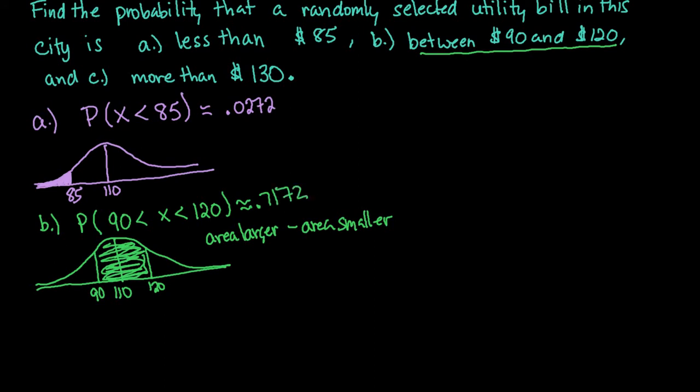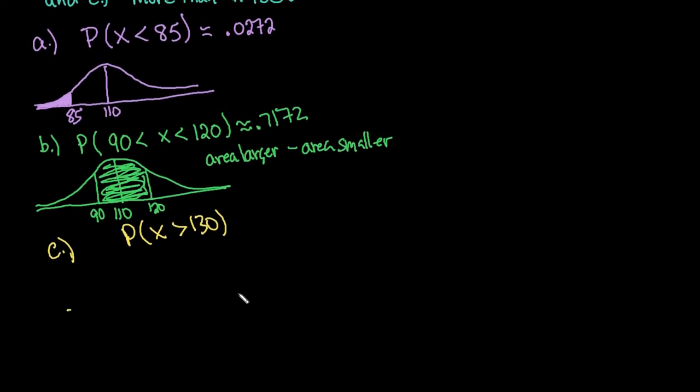Our last one is more than 130. We'll draw our picture again for visual representation. It's centered at 110, and 130 is more than one standard deviation above, so we're looking for the area to the right since more than is always to the right.